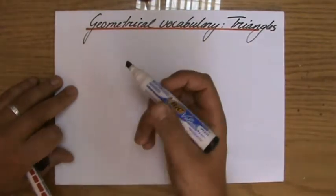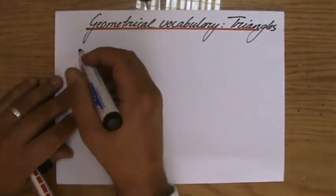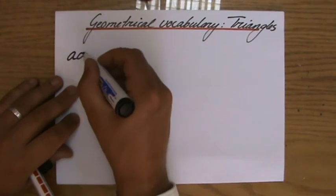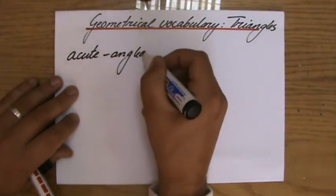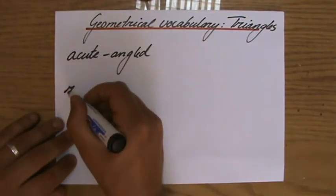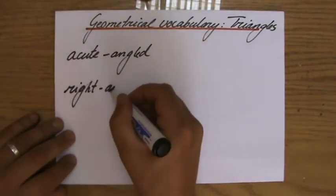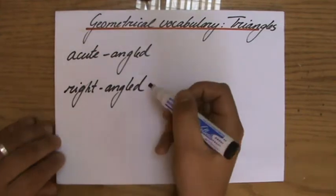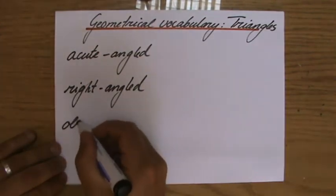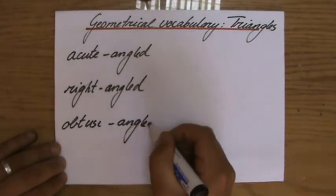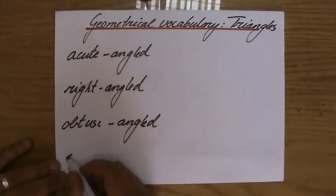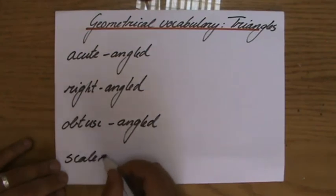And we have six types of triangles you need to be aware of. The first one are acute angled triangles. The second one, right angled triangles. The third one, obtuse angled triangles. I'm going to say scalene triangles.